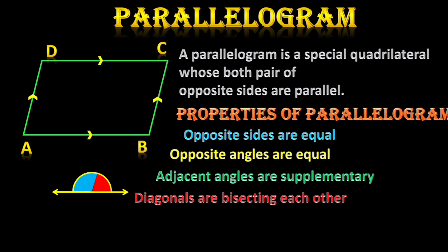Now, the diagonals bisect each other. Both diagonals are not equal but they bisect each other. If O is the intersecting point of both diagonals, then AO equals OC and BO equals OD.